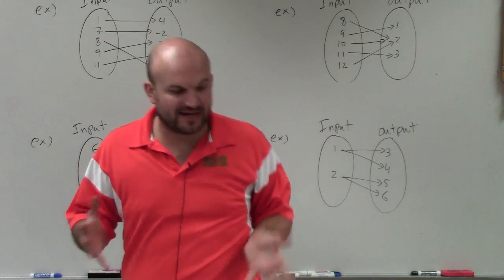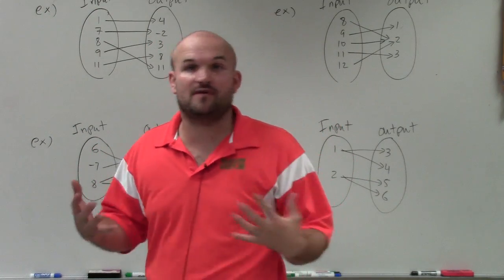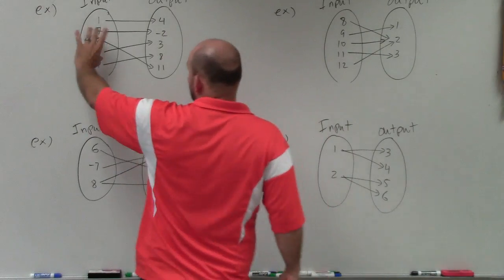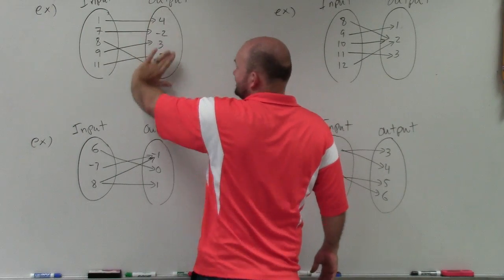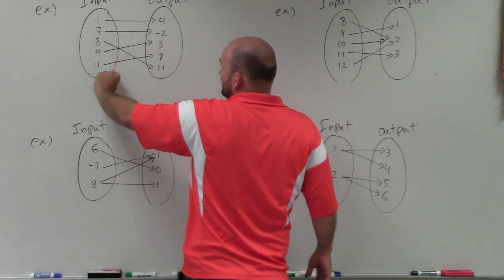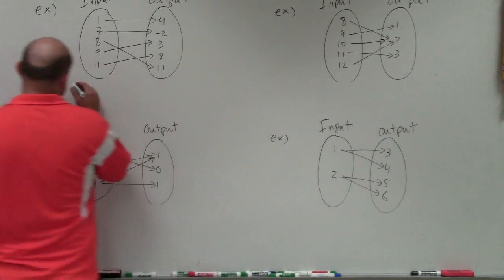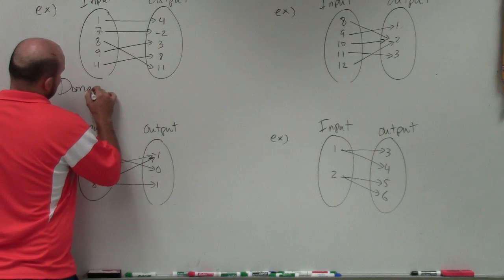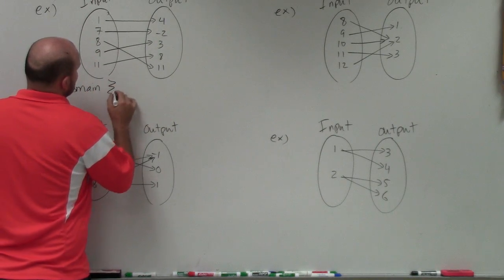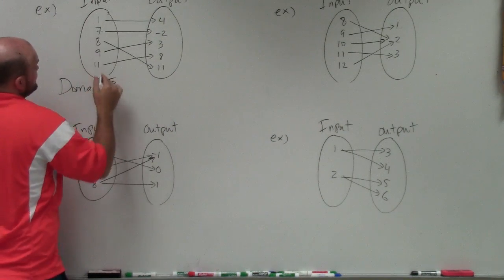Before we get into domain and range, we've got to make sure we're taking domain and range of a function, meaning that all the inputs uniquely map to one single output. You can see that each one of these only goes to one output. So therefore, the domain is, I'm just going to write in set notation, basically just all of my values in my input.